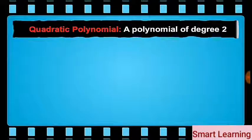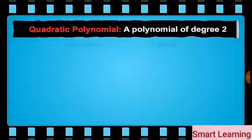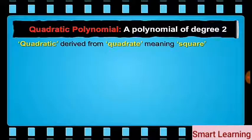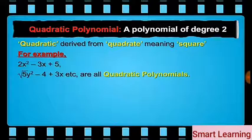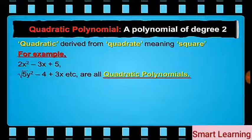Secondly, we have the quadratic polynomials. A polynomial of degree 2 is called a quadratic polynomial. The name quadratic has been derived from the word quadrate which means square. For example, 2x squared minus 3x plus 5, square root of 5y squared minus 4 plus 3x, etc. are all examples of quadratic polynomials.